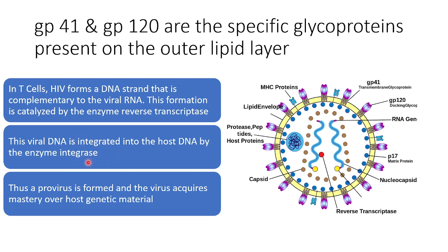The function of integrase is to integrate the viral DNA, which is complementary to the RNA, into the host DNA. Now the provirus is formed and the virus acquires mastery over host genetic material. As a result, each cell in the host body will act like an HIV factory, which produces the proteins required for the HIV virus.